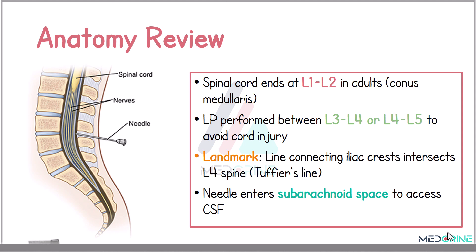Understanding the anatomy of the spine is quite important in lumbar puncture. In an adult, the spinal cord typically ends at the level of the first or the second lumbar vertebra. This makes it safe to perform the lumbar puncture between the third and fourth lumbar vertebra, or between the fourth and fifth lumbar vertebra, avoiding the risk of spinal cord injury. One of the most important landmarks during lumbar puncture is the Tuffier's line, which is a line connecting the iliac crest and intersecting at the fourth lumbar spine. It helps to guide proper needle placement when performing a lumbar puncture.